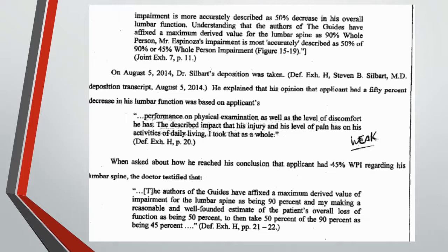Understanding that the authors of the guides have affixed the maximum derived value for the lumbar spine as 90% whole person, Mr. Espinosa's impairment is most accurately described as 50% of 90%, or 45% whole person impairment. In my opinion, this paragraph does not adequately state why the strict impairment rating is not accurate or why the alternative rating is more accurate. He simply says 'taking all things into consideration' without providing specific references to the medical records or explaining what about the examinee's clinical presentation qualifies him to conclude there's a 50% decrease in lumbar function.